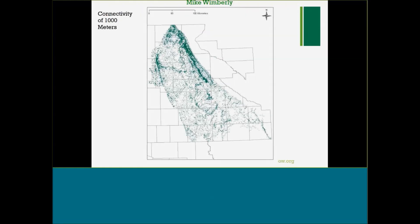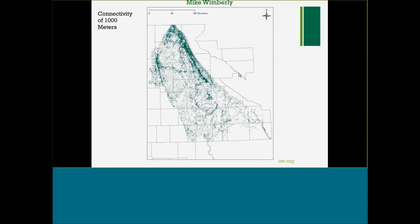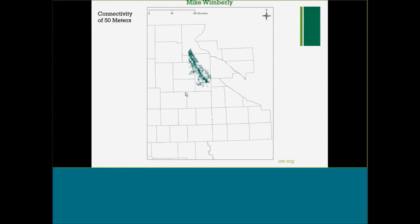Dr. Wimberly has also looked at something really unique regarding connectivity. On a map of the Prairie Coteau of South Dakota — if you're a prairie skink or a badger or a butterfly that can move 1,000 meters, you can take advantage of corridors across 1,000 meters of connectivity and pretty much the entire landscape is available to you. But if you can only tolerate a 500-meter gap, about half the landscape drops off. If you can only tolerate a 50-meter gap, look at how much landscape you don't have available — even on the Prairie Coteau, one of our hotbeds of intact grasslands. This is going to be a pretty important paper.